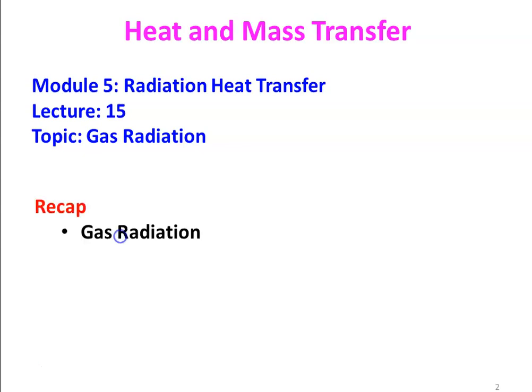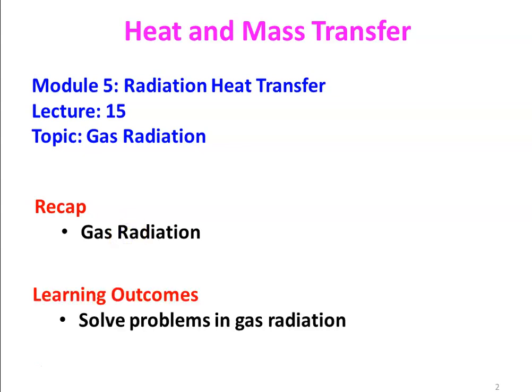The topic is Gas Radiation. In the previous lecture, we discussed the theoretical part of the gas radiation — how to calculate radiation heat transfer between the gas in an enclosure and the wall. In this lecture, we solve a few problems on gas radiation, and at the end of the lecture, the student will be able to solve problems in gas radiation. That is the learning outcome. This gas radiation problem is applicable for gas turbine combustion chambers and IC engine combustion chambers.